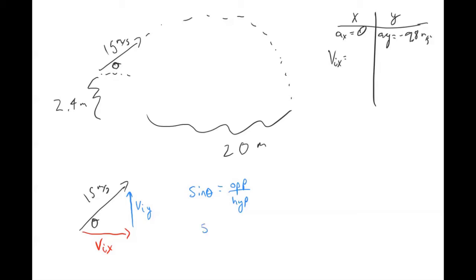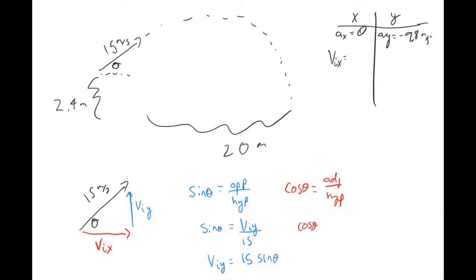In our problem, sine theta equals the initial y-velocity over 15. So the initial velocity in the y is 15 times sine of theta. Repeating that process for x, we get: v-initial-x equals 15 cosine theta. That's our initial component of velocity in the x direction.